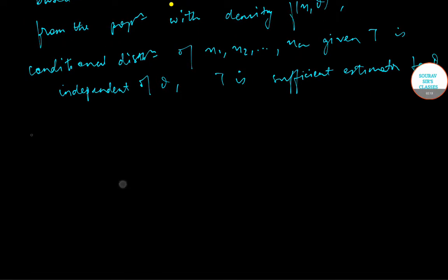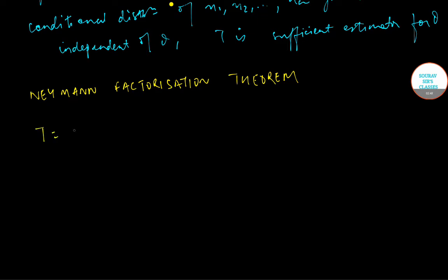Now the Neyman factorization theorem states the necessary and sufficient condition for a distribution to admit sufficient statistic. It states that t is equal to t(x) is sufficient for theta if and only if